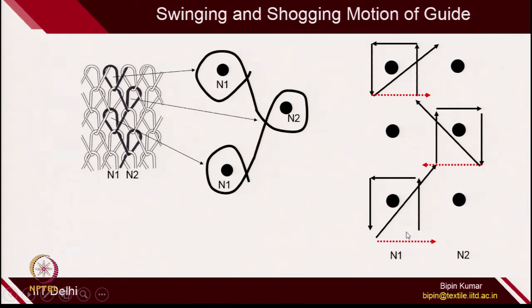You can easily understand that to describe the movement of guides, it is just the repetition of swinging and sogging. So if you can explain those repetitions in terms of numbers, you can express this fabric structure.